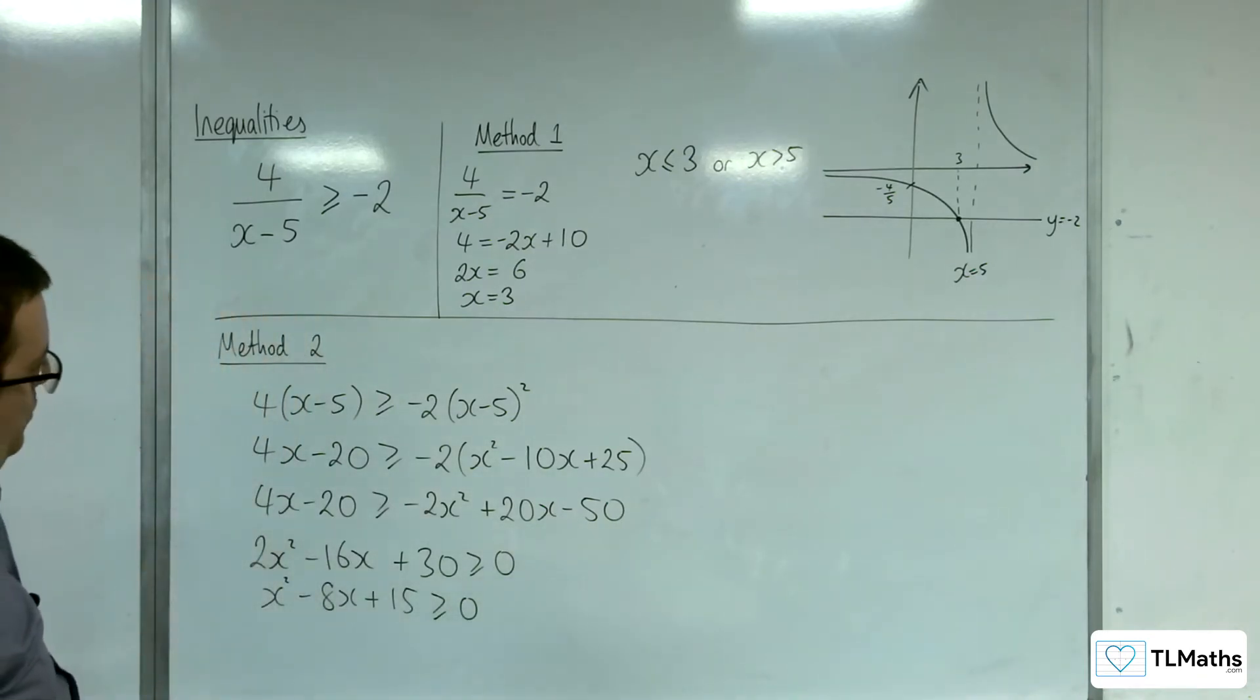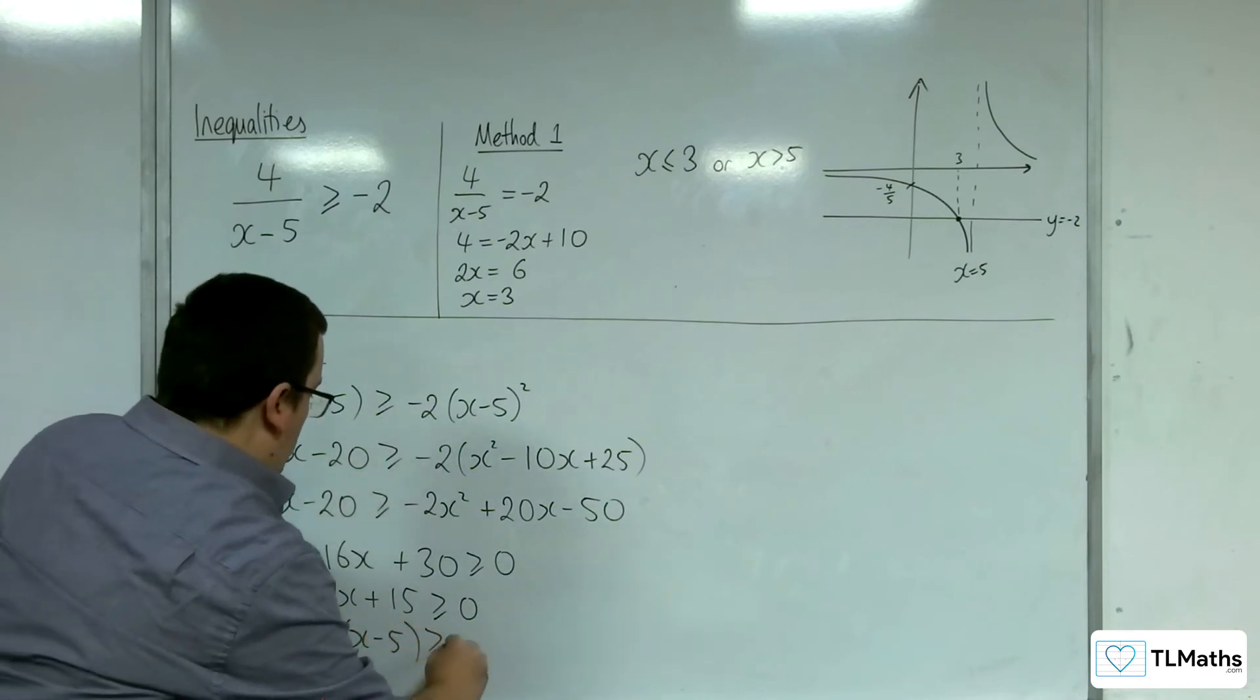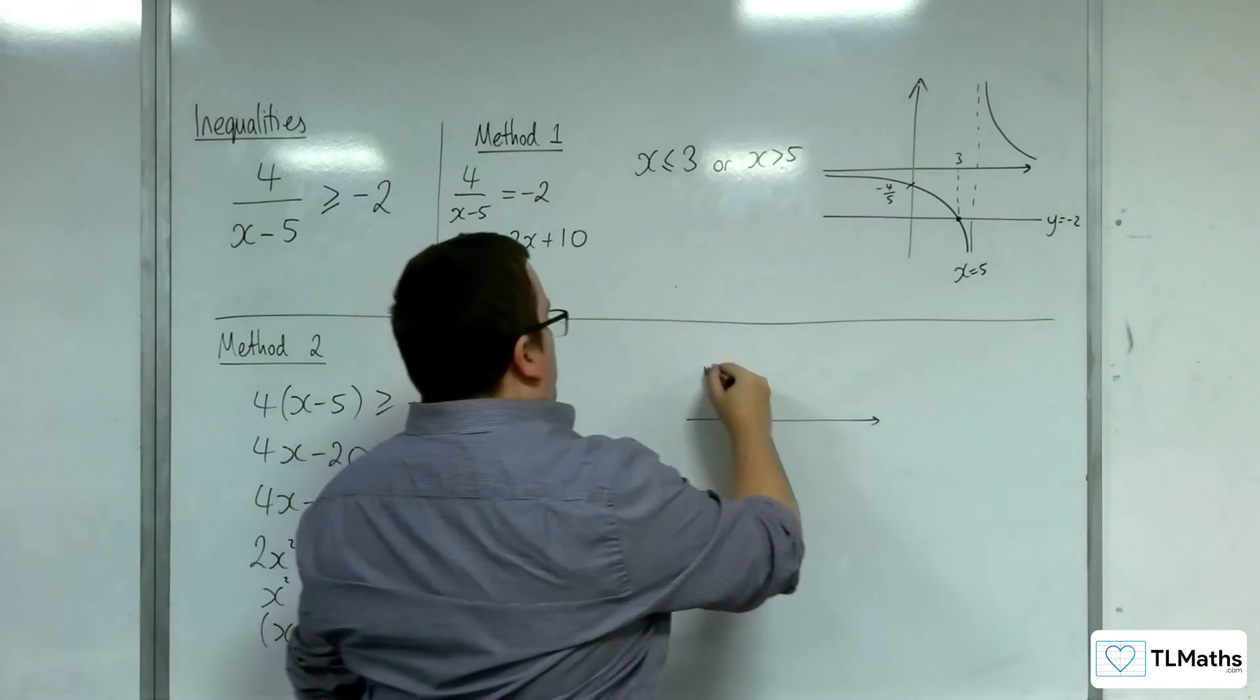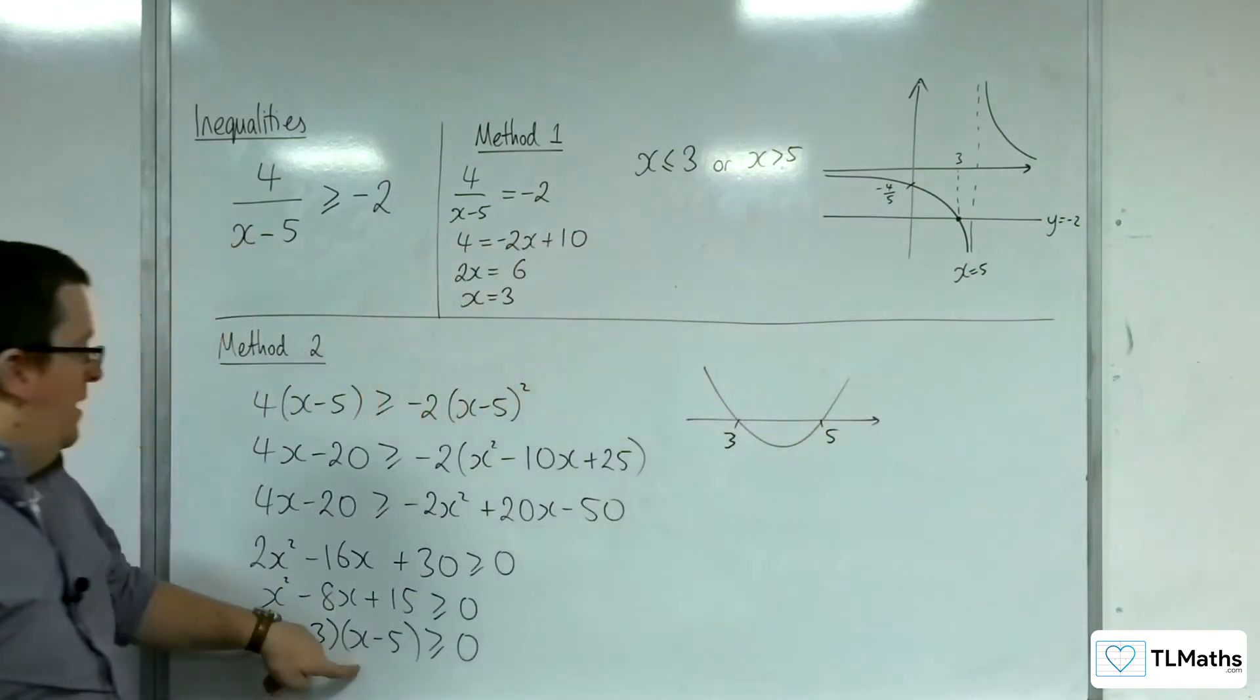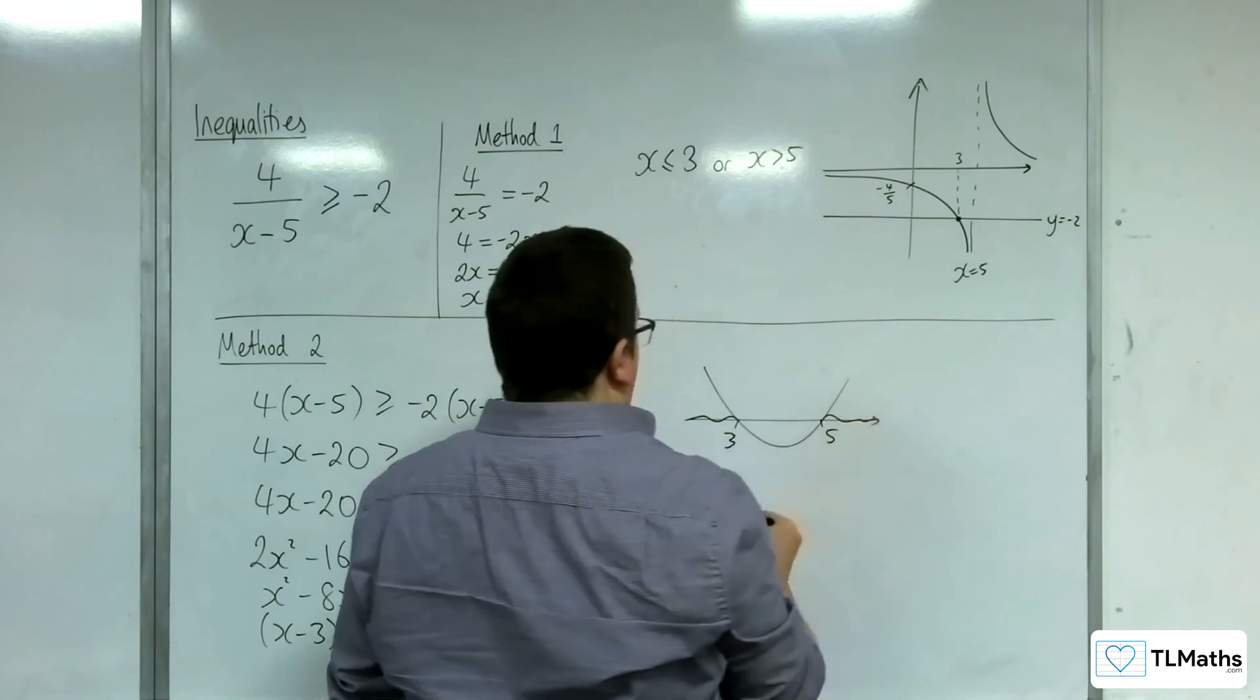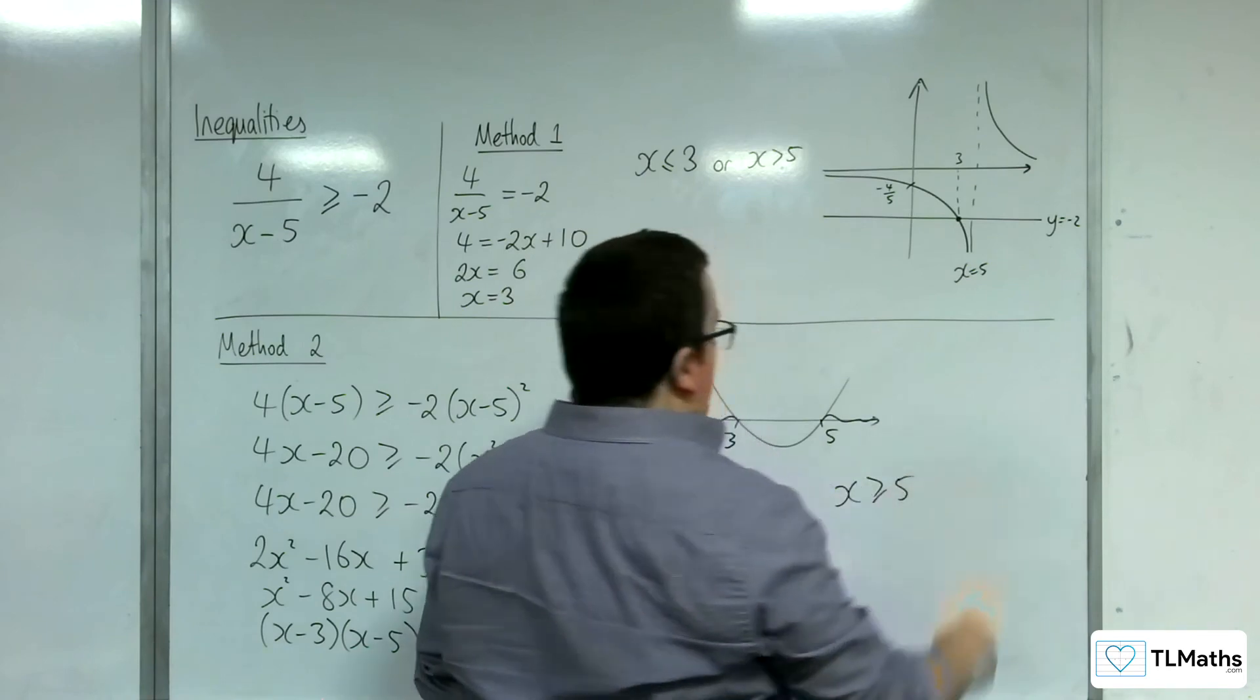So then we've got x minus 3, x minus 5 is greater than or equal to 0. So let's draw our parabola going through 3 and 5. Where is the parabola above or equal to 0? So there and there. So x is less than or equal to 3 or x is greater than or equal to 5. But be careful.